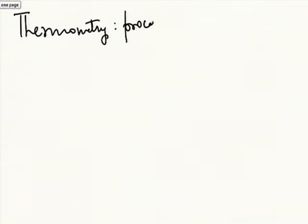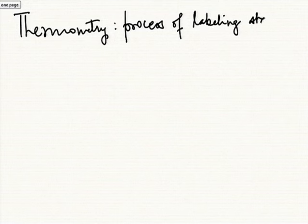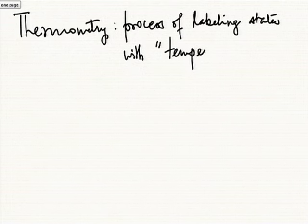As we go through, we will define some useful temperature scales, particularly the ideal gas Kelvin scale of temperature, and one of the equations of state we will use is the ideal gas equation of state. By Thermometry we mean the process of labeling states with temperature. Assigning any state of a given system with an appropriate temperature is the job of Thermometry.